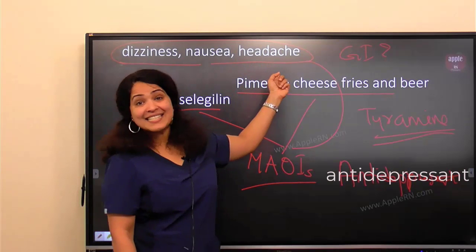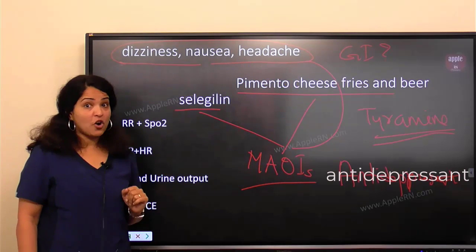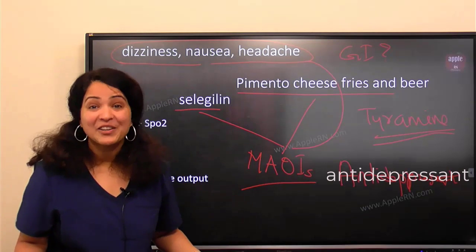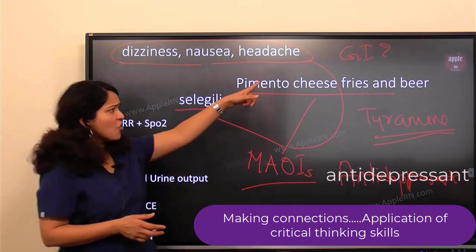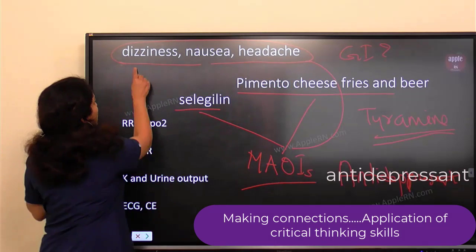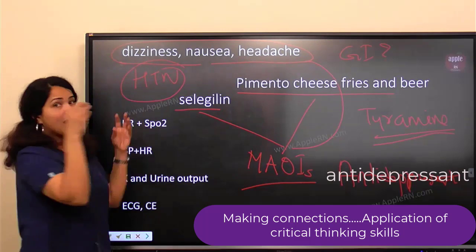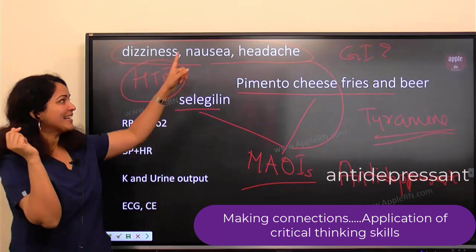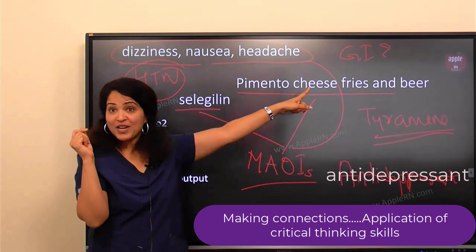So with selegiline — an MAOI — and someone eating a lot of tyramine-rich food, what are you worried about? Hypertensive crisis. The patient's blood pressure is going to go up. And can dizziness, nausea, and headache be signs of hypertensive crisis? Of course — so this is likely a hypertension issue, not a GI issue. Now we're getting the connection.